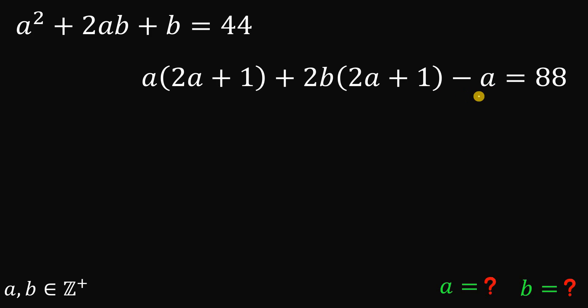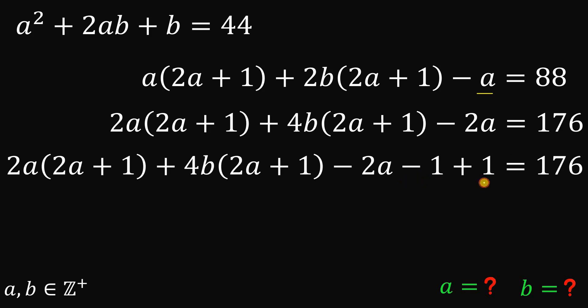So we need to get 2a plus 1 in this expression. So what we're going to do is multiply again both sides by 2. So we now have 2a. So what we need is negative 1. So if we factor out negative 1, we get negative 1 times 2a plus 1. So that's very simple. Just subtract 1 and add 1. This is just 0. Now subtract 1 on both sides to eliminate this positive 1. So we have here 176 minus 1 is 175.